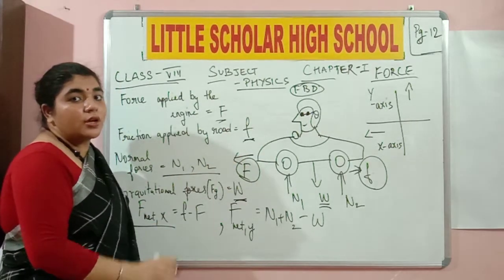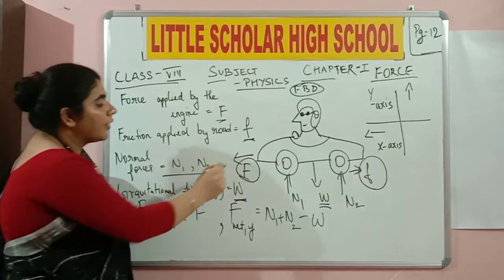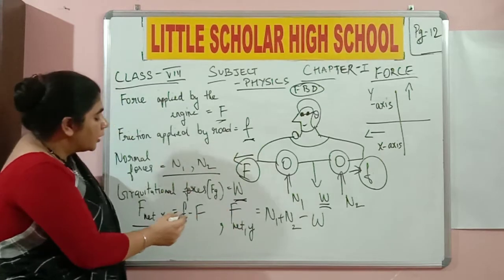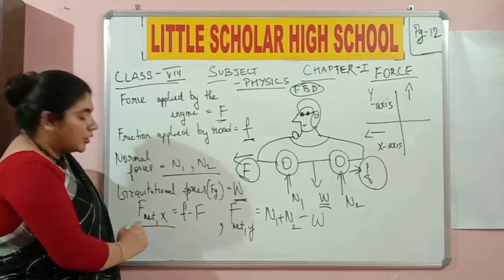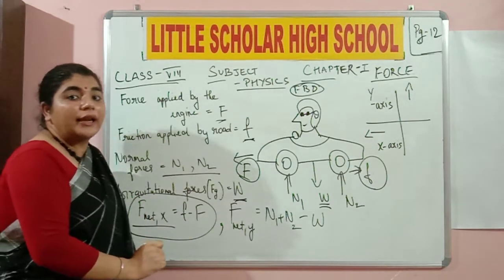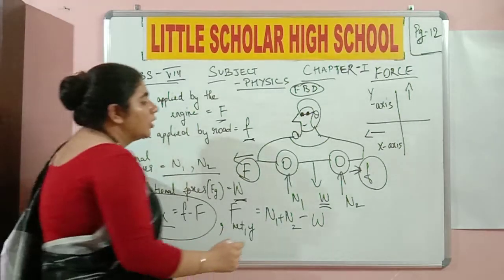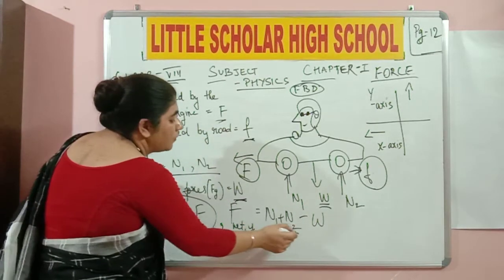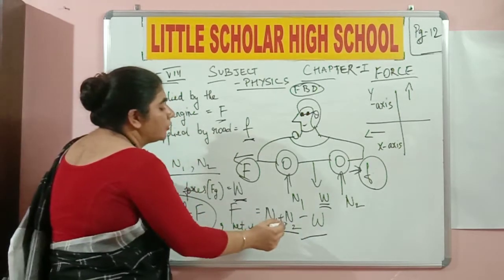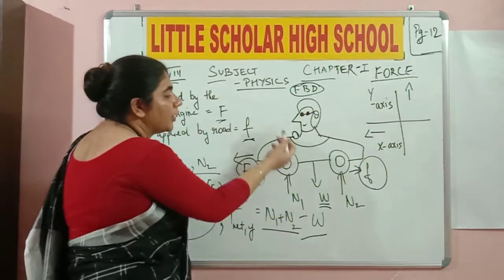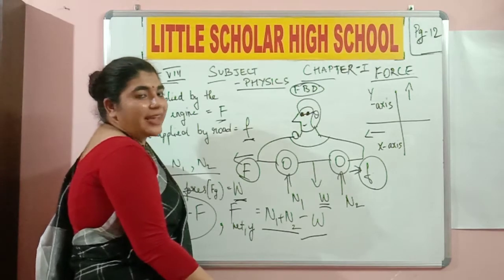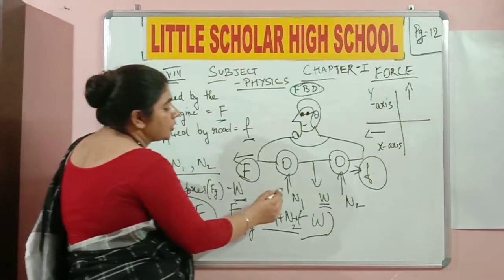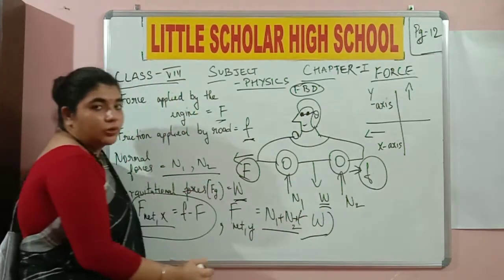F net X is the net force along the X axis. Along the X axis we have capital F and small f, which are equal and opposite in direction — so the net force is written as small f minus capital F. For the Y axis, the net force is the sum of the normal forces and gravitational force: N1 plus N2 minus W. N1 and N2 are the normal forces from the tires, and W is the weight or gravitational pull — they are opposite in direction.